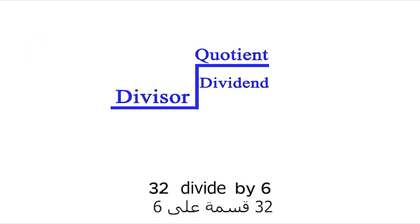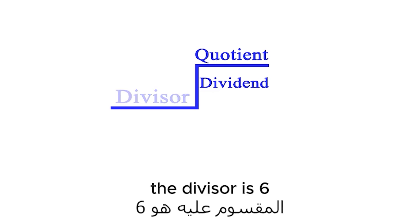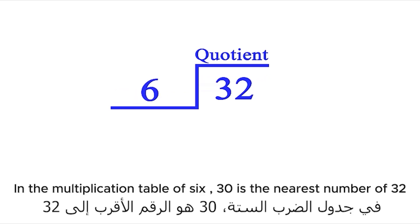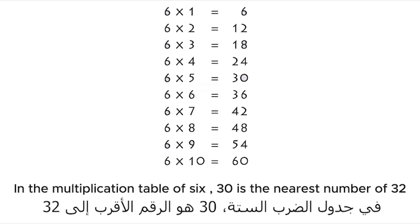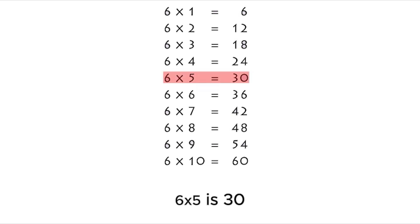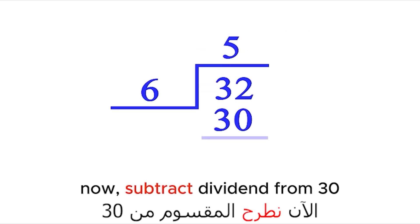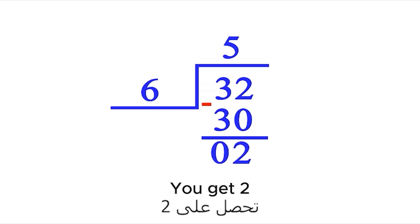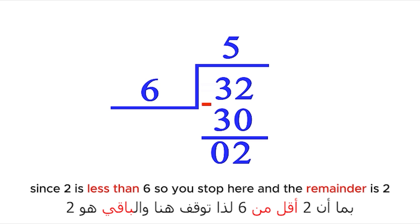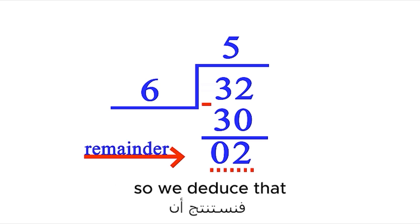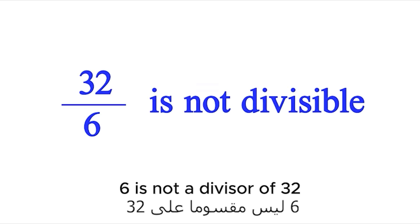Let's do an example: 32 divided by 6. The divisor is 6 and the dividend is 32. In the multiplication table of 6, 30 is the nearest number to 32. Since 6 times 5 is 30, put 5 in the quotient and 30 under the dividend. Subtract: 32 minus 30 gives 2. Since 2 is less than 6, we stop. The remainder is 2. Since the remainder is not 0, we deduce that 6 is not a divisor of 32.